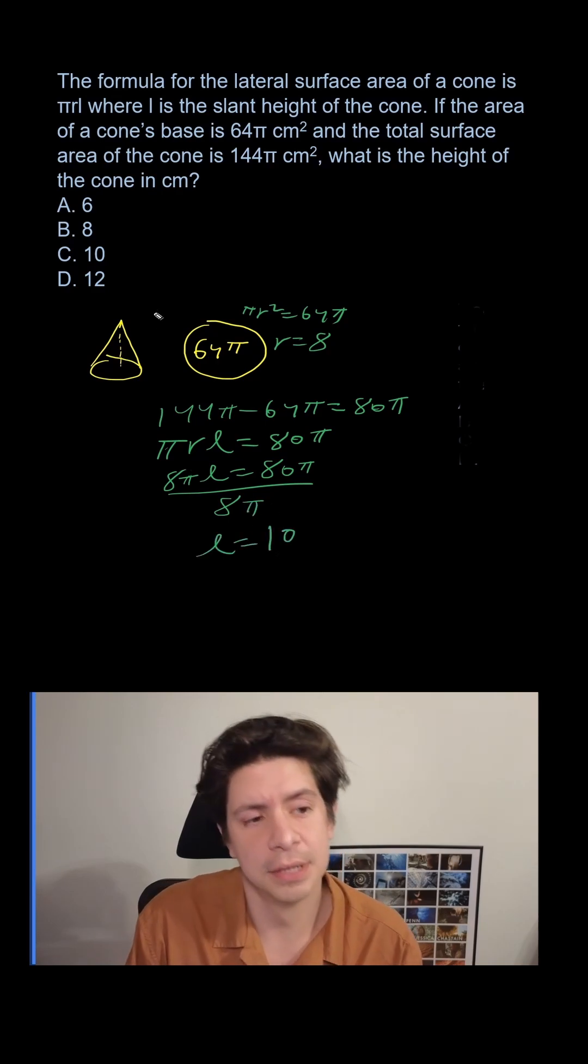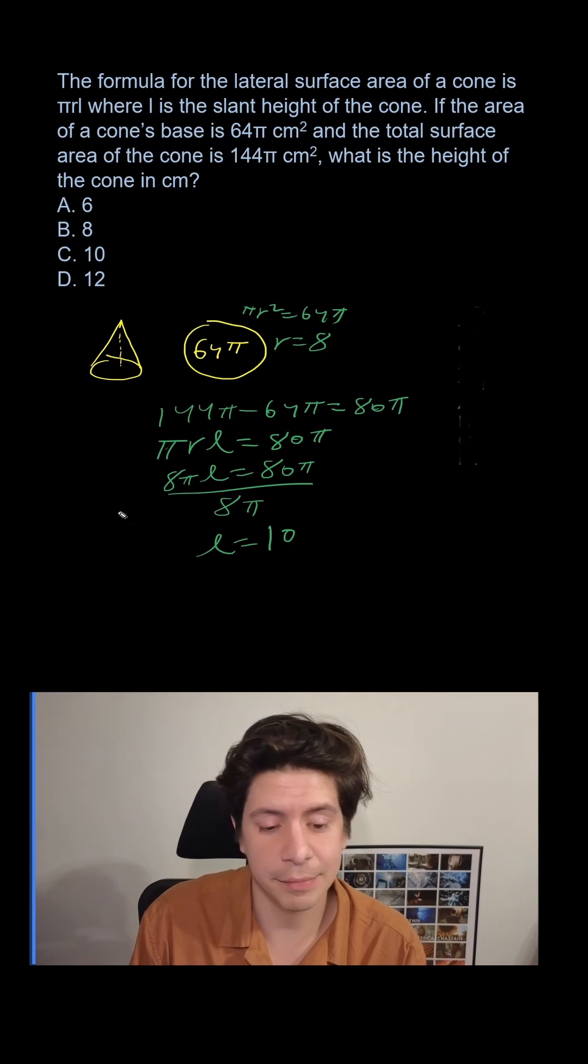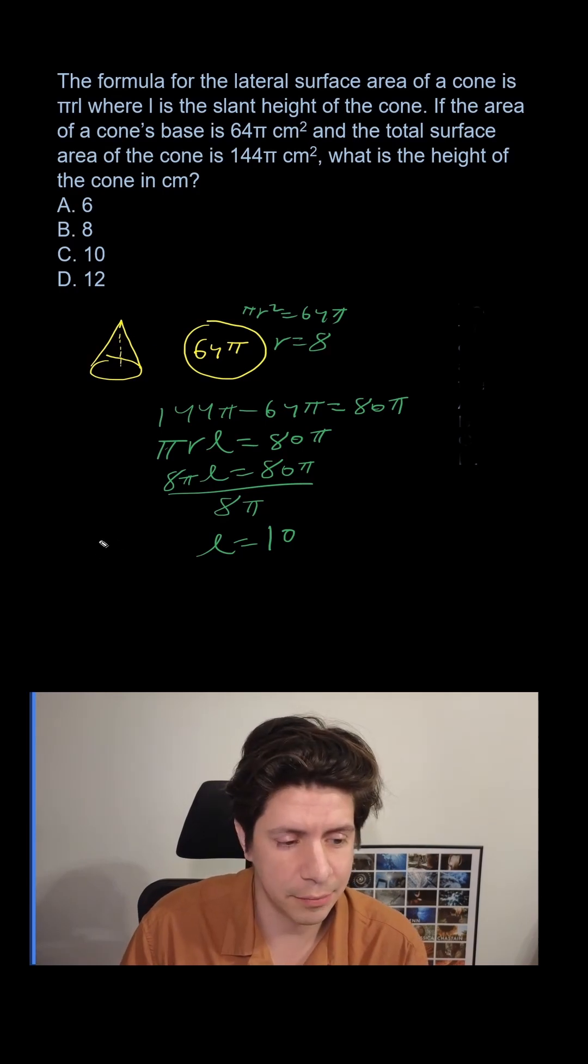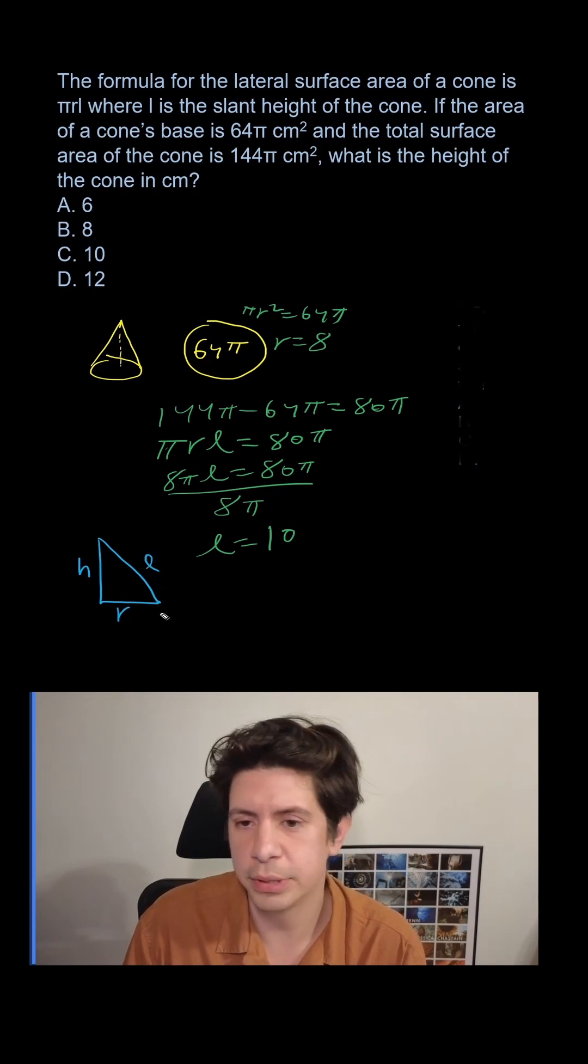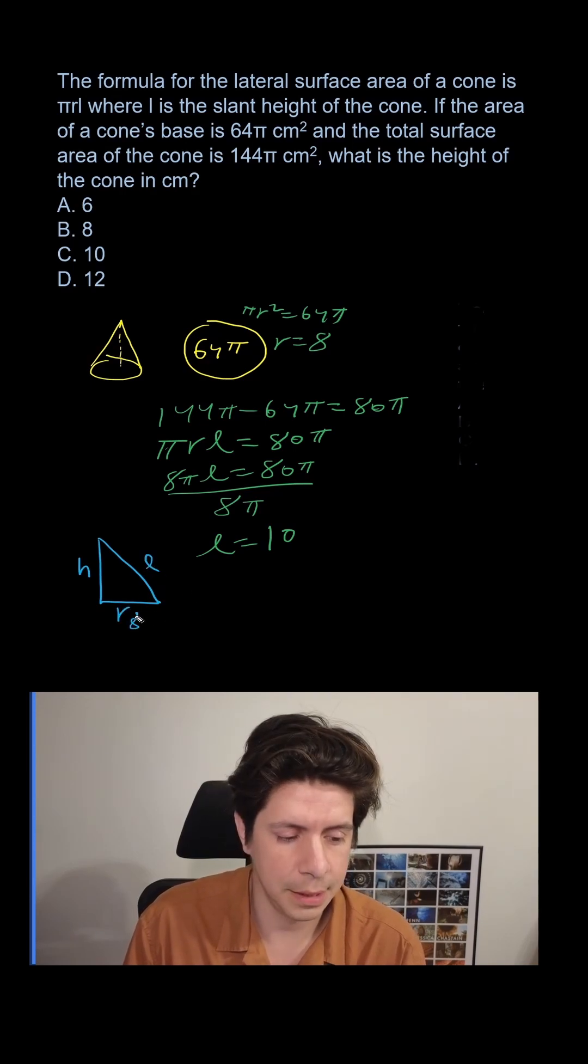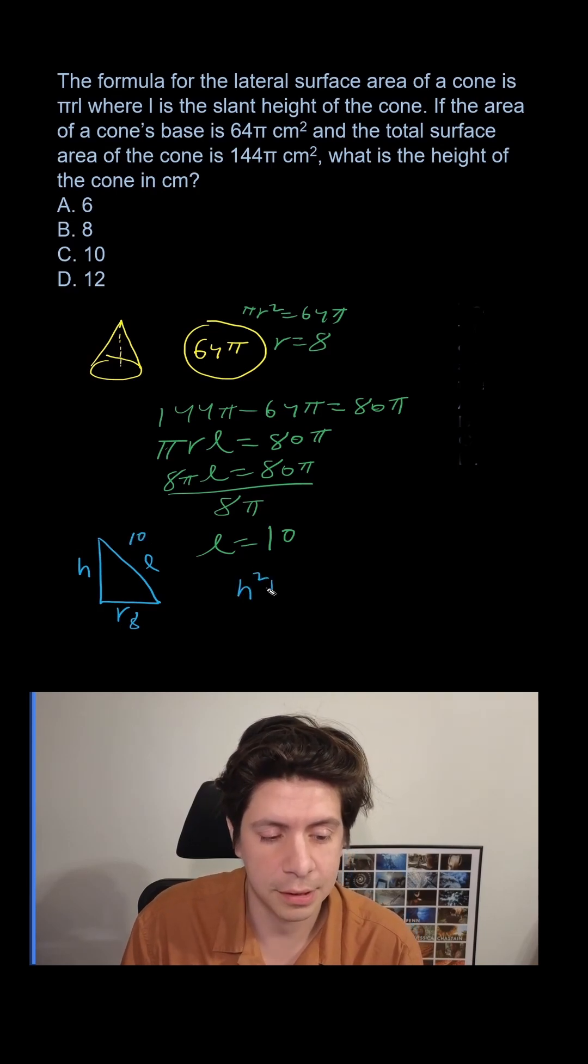Now, how does that help us know the actual height? Well, if you think about it, the height and the slant height make a right triangle with the radius. So this is H, this is L, this is R. R is going to equal 8. This is going to be 10. So then we need to find H. We'll do H² plus 8² equals 10².